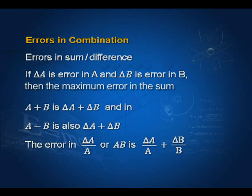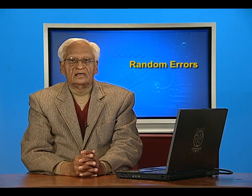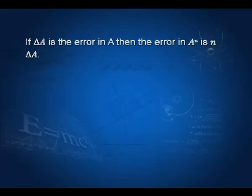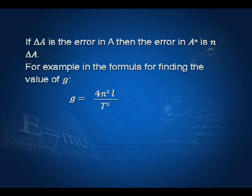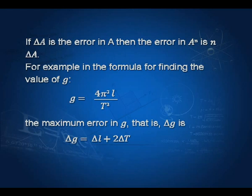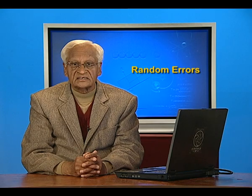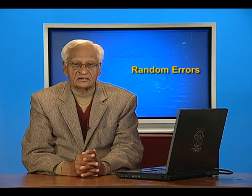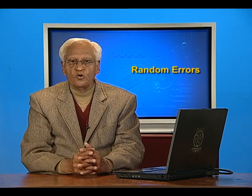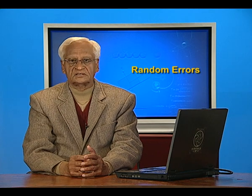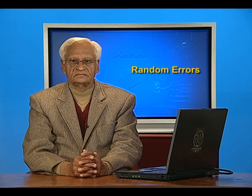The error in A divided by B, or A multiplied by B, is ΔA/A + ΔB/B. If ΔA is the error in A, then the error in Aⁿ is n times ΔA. For example, in the formula for finding the value of G — where G = 4π²L / T² — the maximum error ΔG equals ΔL plus twice ΔT. Notice that the time period contributes twice the error in T, whereas the error in L is just ΔL, meaning time must be measured more precisely than length. To conclude, random errors can be reduced as much as you like by increasing the number of observations. Next time, we shall take another topic: vectors and scalars.